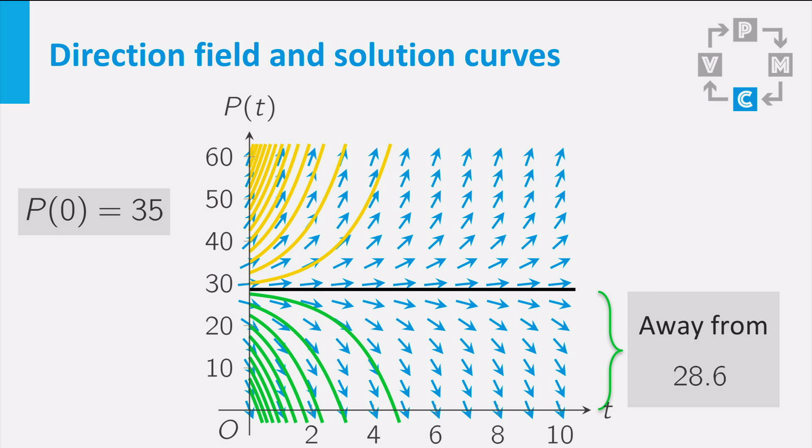If the initial value is below the equilibrium, the solution curve moves away from the equilibrium and towards minus infinity as time increases. And if the initial value is above the equilibrium, the solution curve moves away from the equilibrium and tends to infinity as time increases.